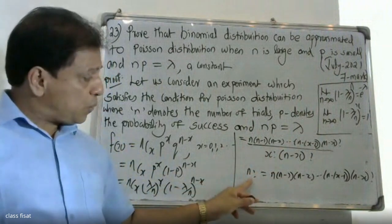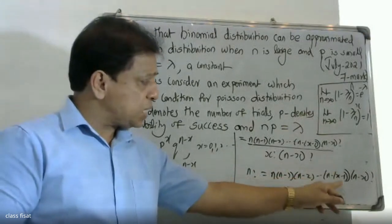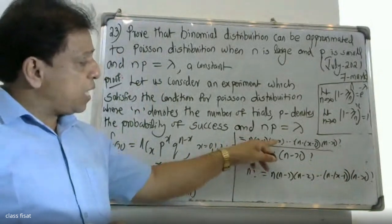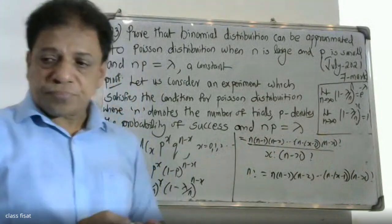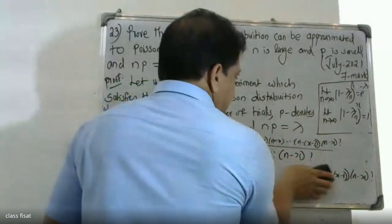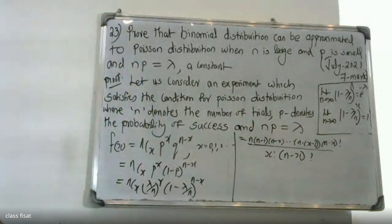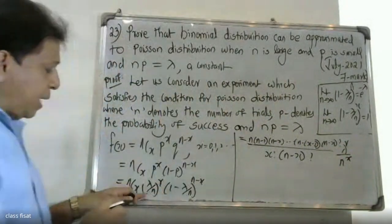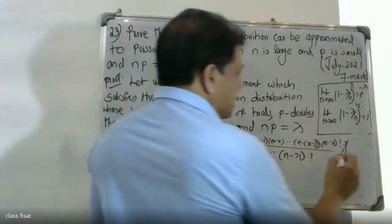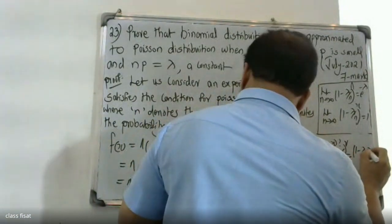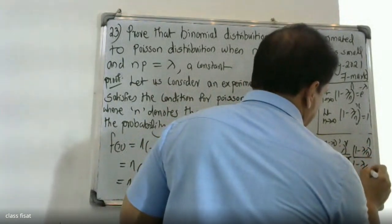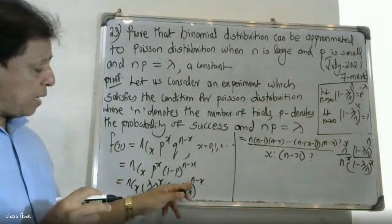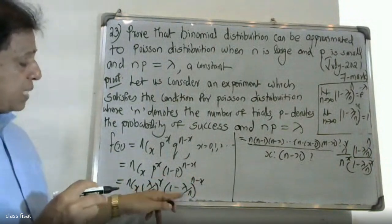Now substituting p equal to lambda by n, we get n into n minus 1, n minus 2, etcetera, n minus x minus 1, into lambda by n raise to x, into 1 minus lambda by n raise to n minus x, divided by x factorial, with n raise to x in the denominator.